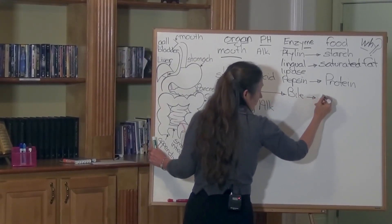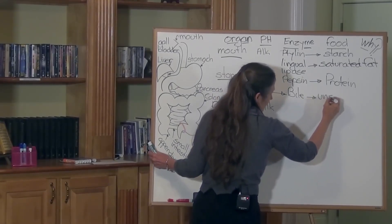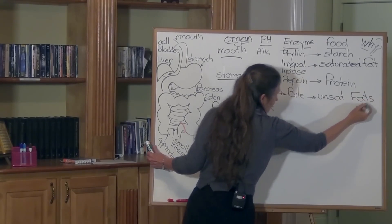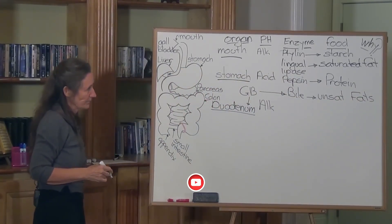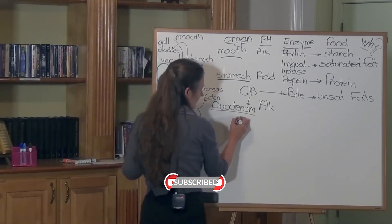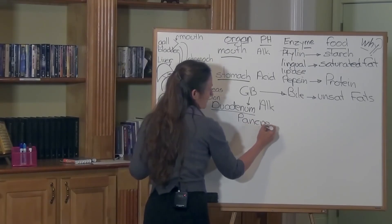Bile is an enzyme that breaks down long chain fatty acids, so this is your unsaturated fats. A lot of those fats are vegetable fats found in your nuts and your seeds. From the duodenum, the pancreas also releases some enzymes in there.